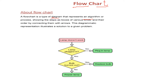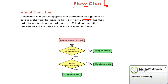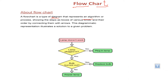A flowchart shows the steps in the form of boxes — boxes of various kinds — and they are all connected with flow-showing symbols which are called arrows.